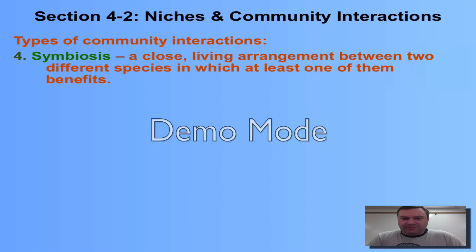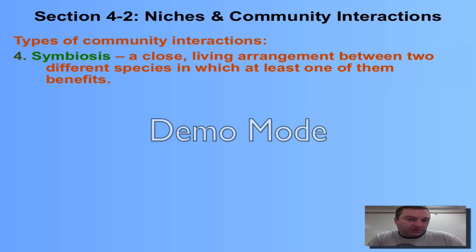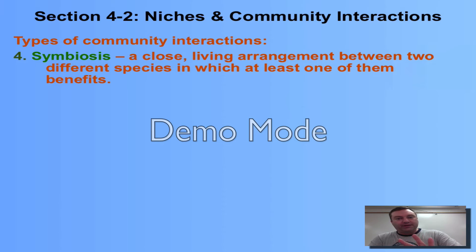If we're going to talk about symbiosis, we better have a definition for it. Symbiosis is a very close living relationship between two different species, and at least one of those species is going to derive a benefit from it. There are three types of symbiosis.